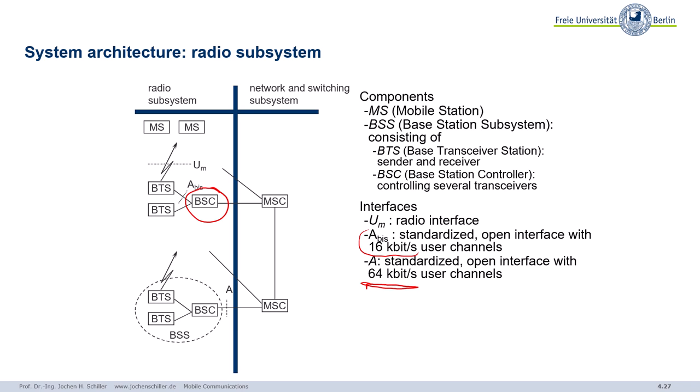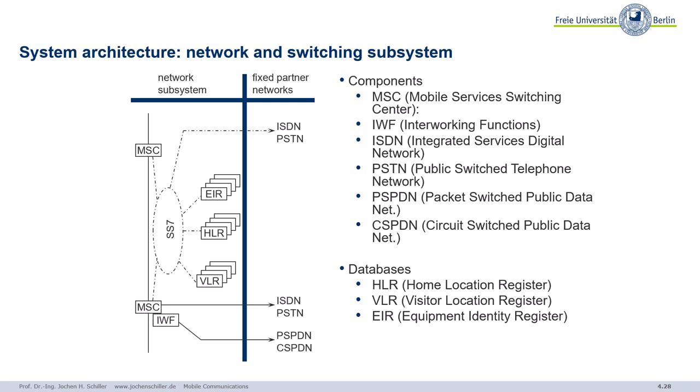So with the radio subsystem and network switching subsystem, we have all these interfaces and the databases — interfaces to many other networks: ISDN, classical PSTNs, but also to packet-switched networks. At the early times of GSM, no one really thought about the success of the Internet, but there was already a packet-switched public data network based on X.25, classical packet switching. So there was packet switching before or parallel to the Internet. But as we will see, you can easily use the Internet as the packet-switched public data network.